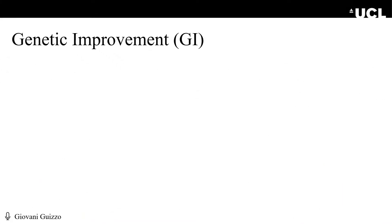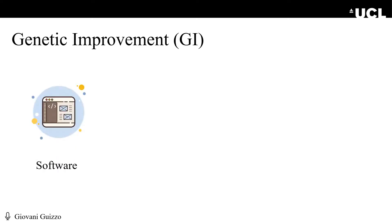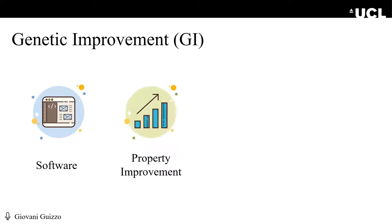For those of you who don't know, I'll briefly introduce the concept of genetic improvement, or GI for short. GI aims at getting an existing software and automatically modifying it to improve a given software property. This property can be functional or non-functional. For example, in automated software repair, a type of functional improvement, we get a failing software and try to generate bug-fixing patches.